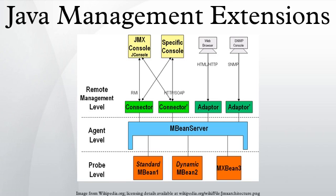The JMX Remote API 1.0 for remote management and monitoring is specified by JSR-160. An extension of the JMX Remote API for web services is being developed under JSR-262. Adopted early on by the J2EE community, JMX has been a part of J2SE since version 5.0. It is a trademark of Oracle Corporation.